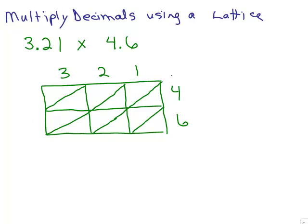So we have 1 times 4, that's 0, 4. And 1 times 6 is 0, 6. 2 times 4 is 0, 8. 3 times 4 is 12. 2 times 6 is 12. And 3 times 6 is 18.